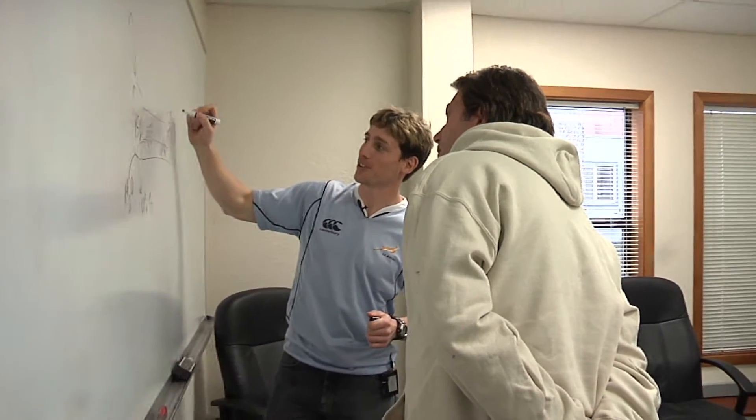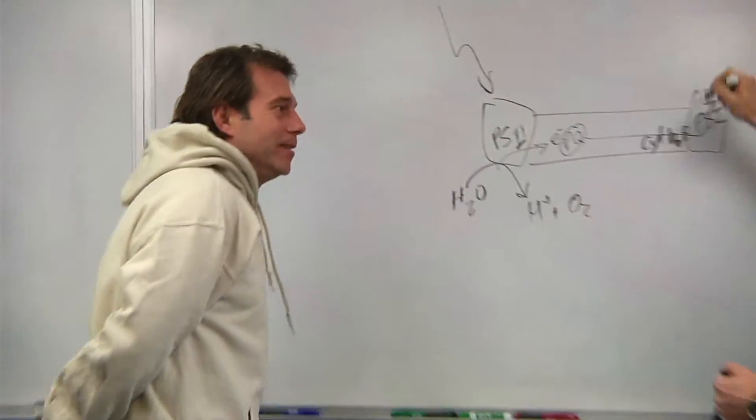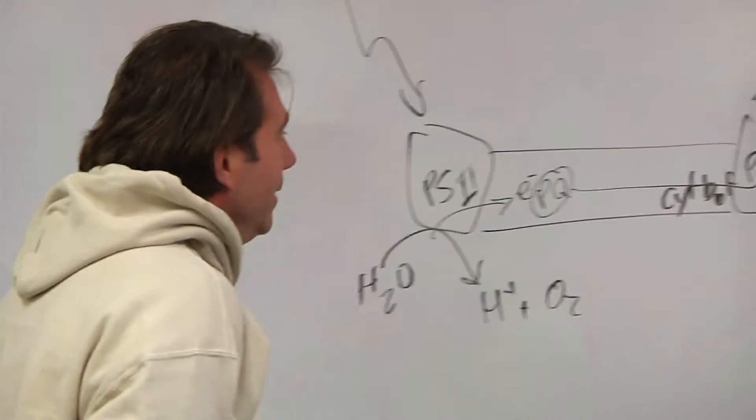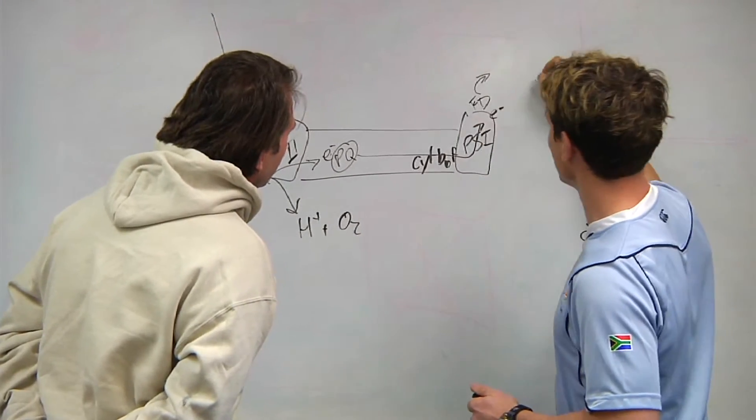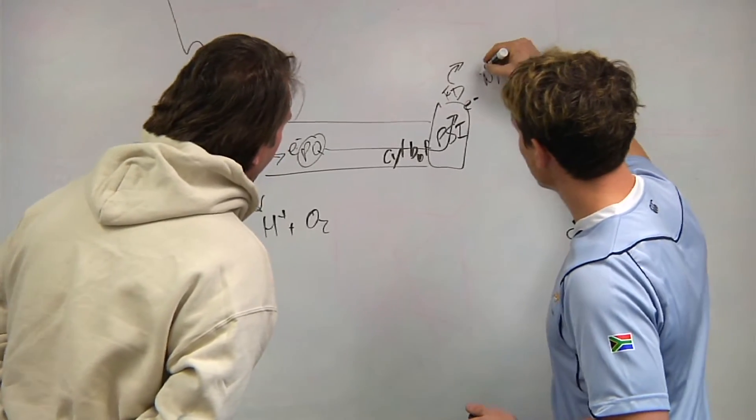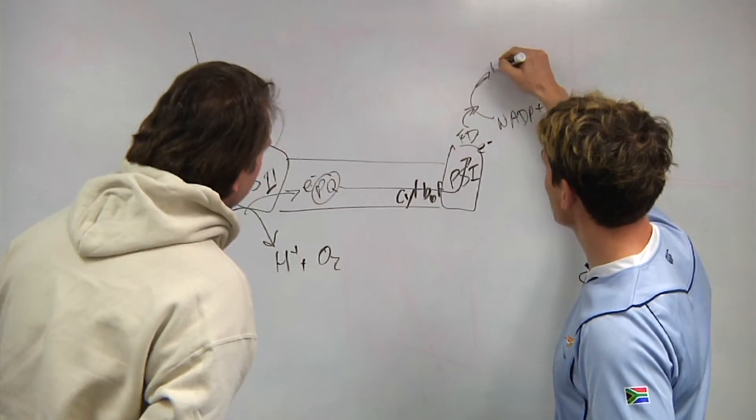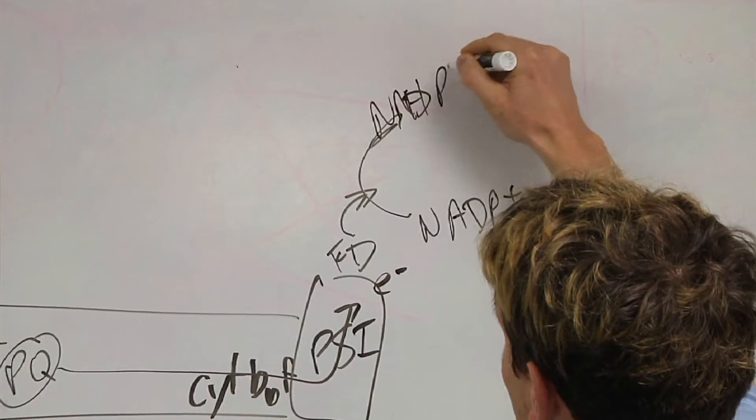The next step, there's a protein called ferredoxin. So the electrons go from ferredoxin, and then the next piece is a protein called NADP. NADP picks up that electron.